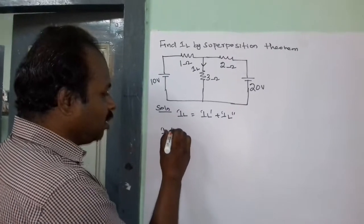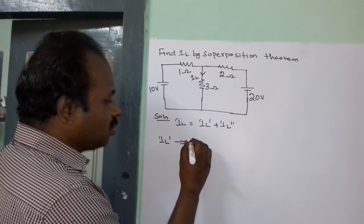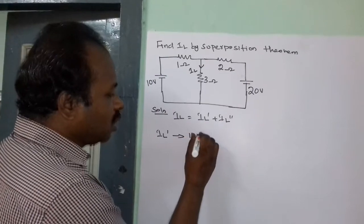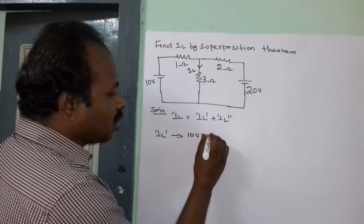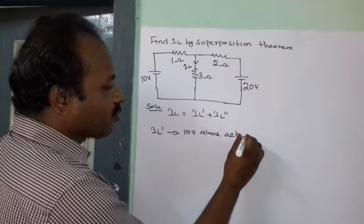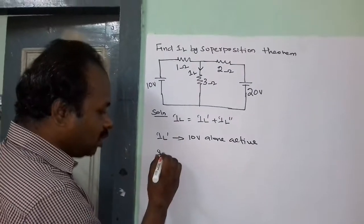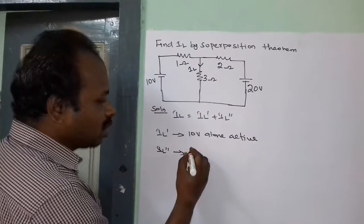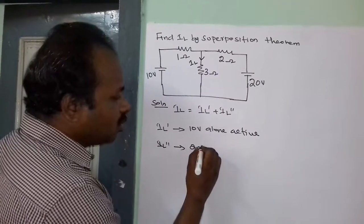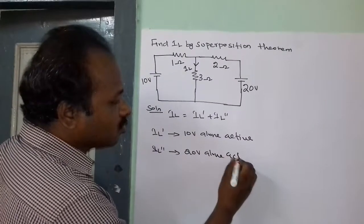IL dash is the current due to 10V alone active, and IL double dash is the current when 20V alone is active.